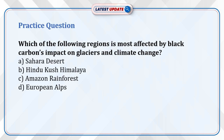Now is the time for a practice question. Which of the following regions is most affected by black carbon's impact on glaciers and climate change? Option A: Sahara Desert. Option B: Hindu Kush Himalaya. Option C: Amazon Rainforest. Or Option D: European Alps.